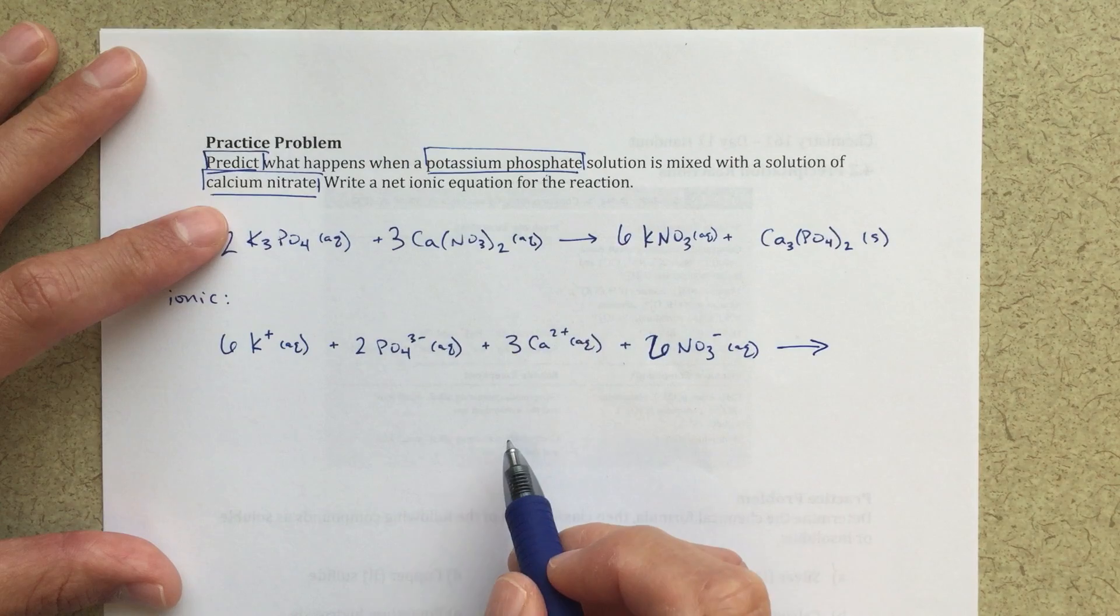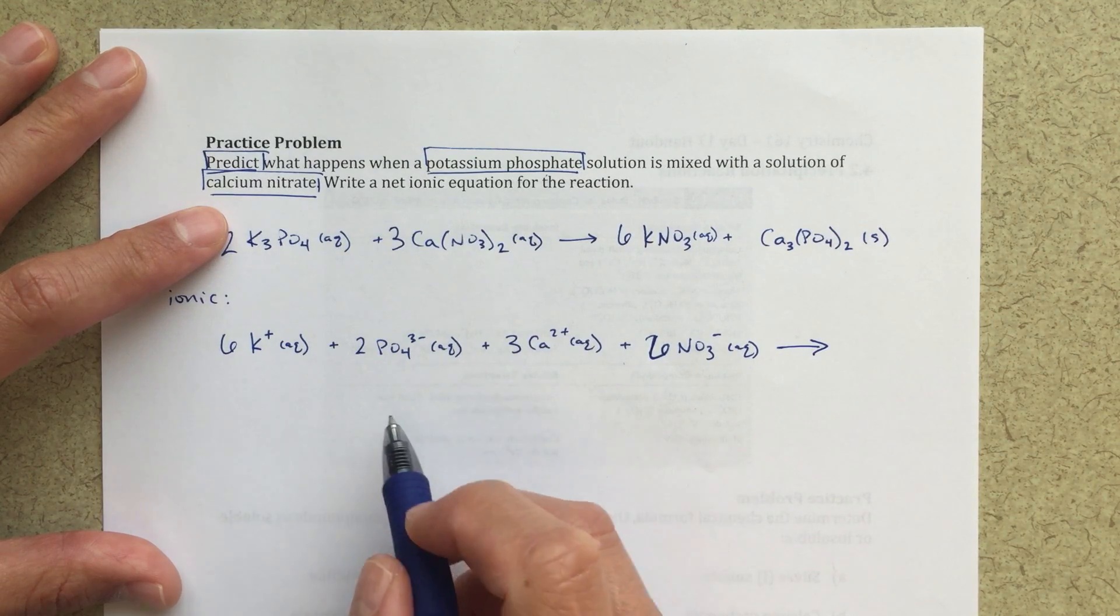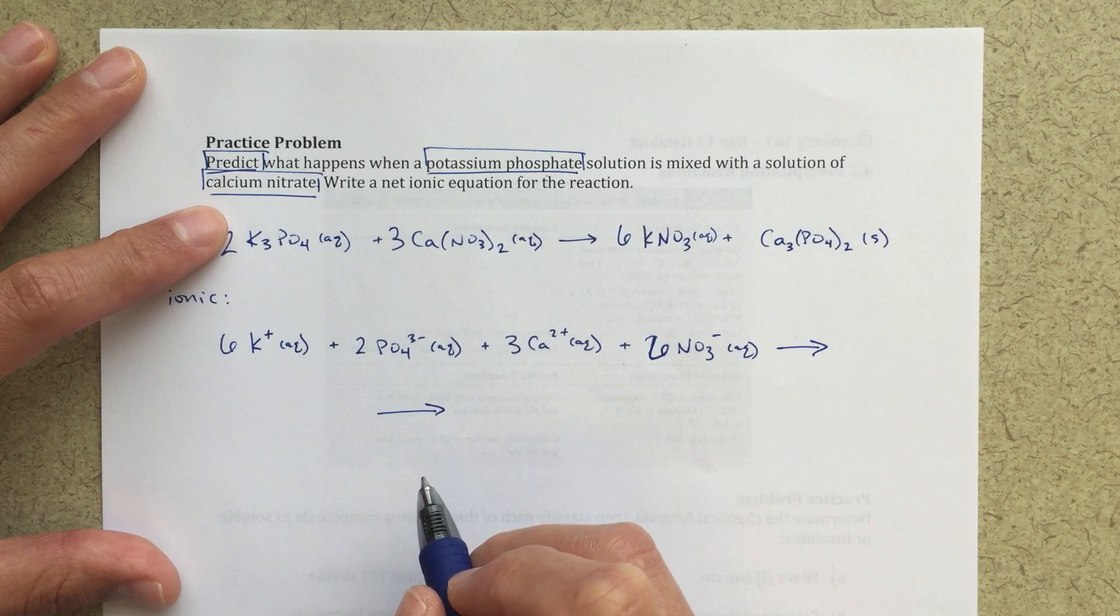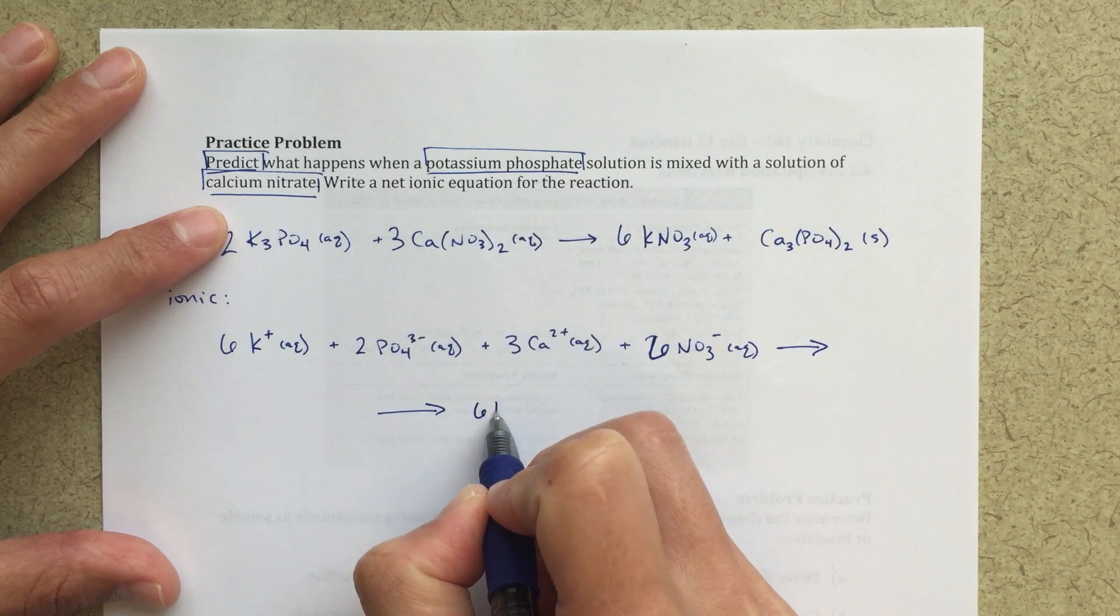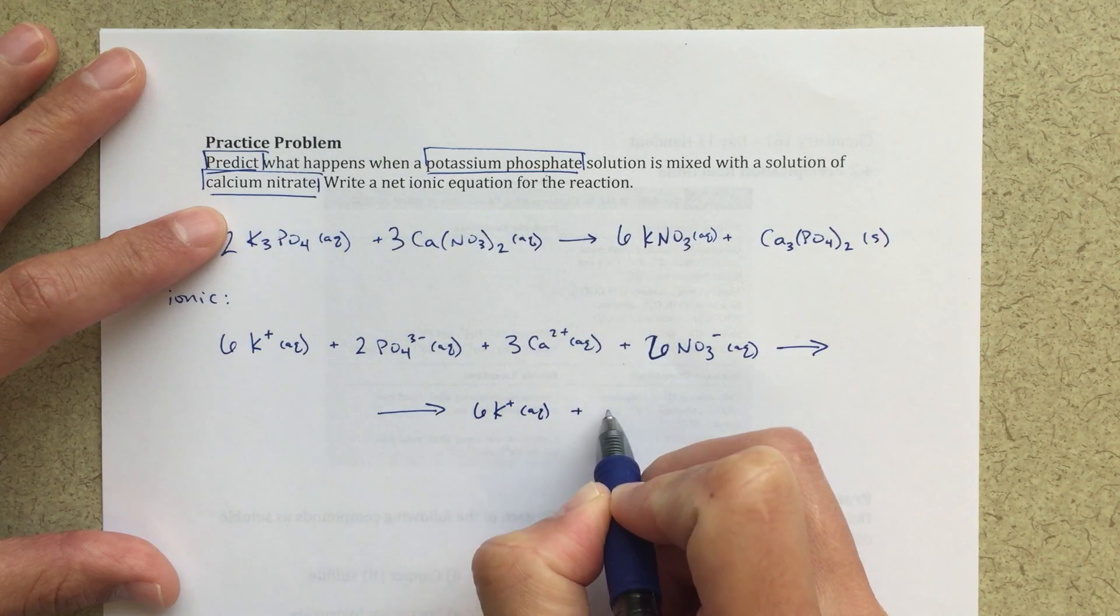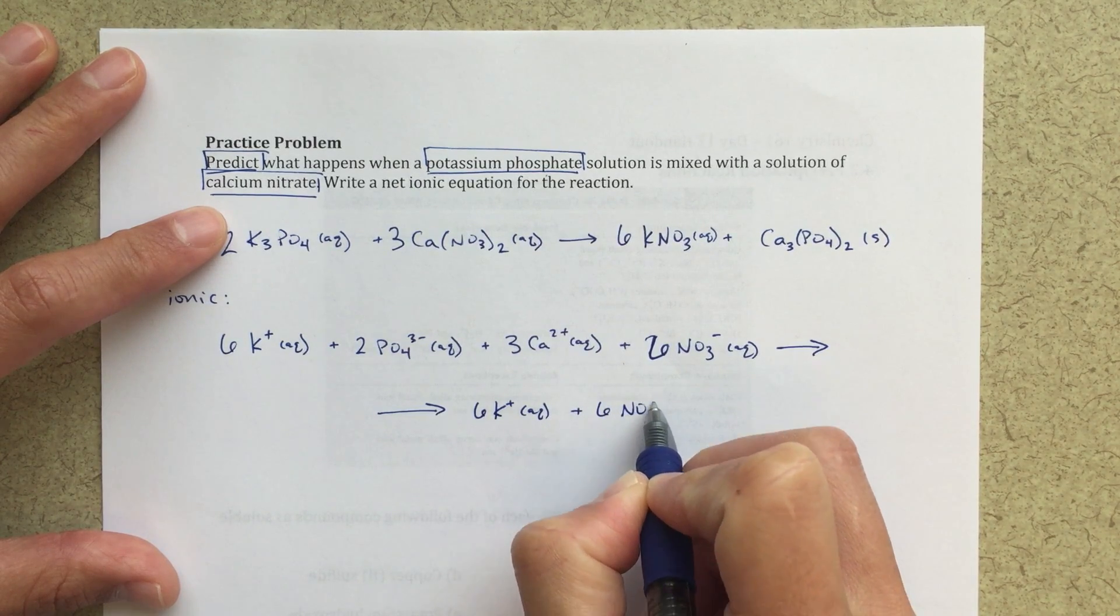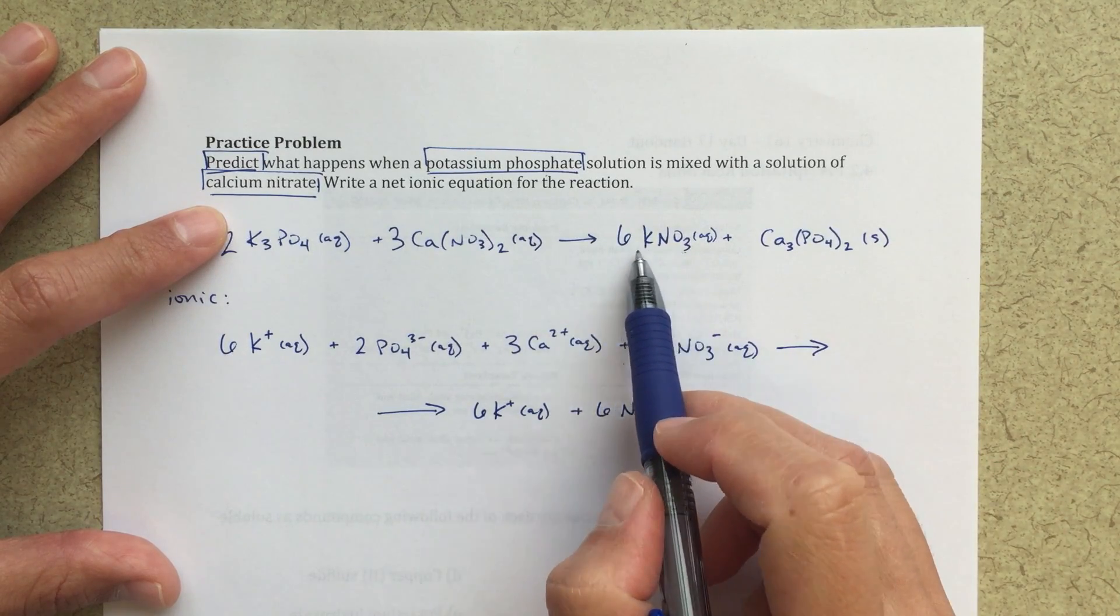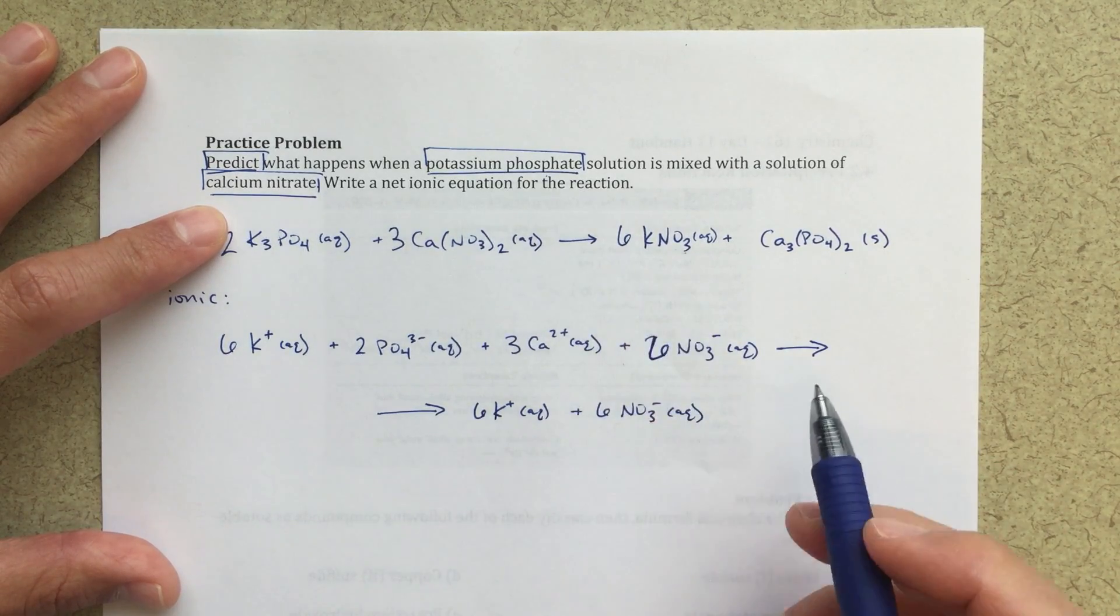I'm going to do my reaction arrow, and then down here I'm going to write the products. So for the products, I'll just write another reaction arrow so we're clear. We're going to have six K plus aqueous plus six NO3 minus aqueous. So that's for my KNO3, I've got six KNO3, so six K plus, six NO3 minus.